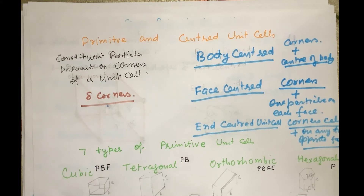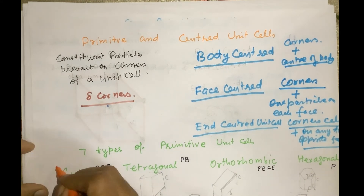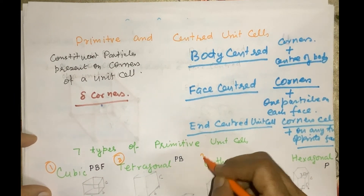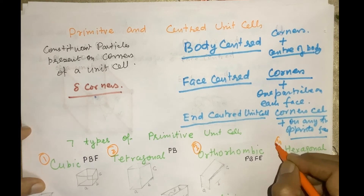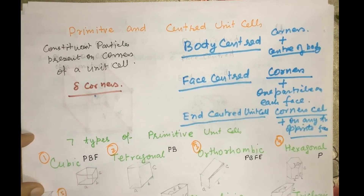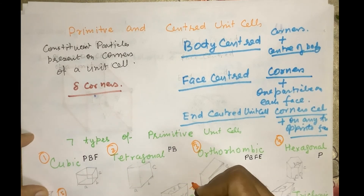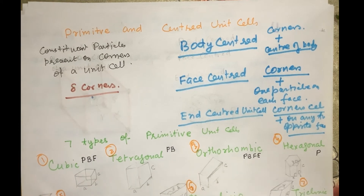There are seven types of primitive unit cells: cubic, tetragonal, orthorhombic, hexagonal, rhombohedral, monoclinic, and triclinic. These can be classified on the basis of the lengths of their edges and the angles between the edges — alpha, beta, and gamma.